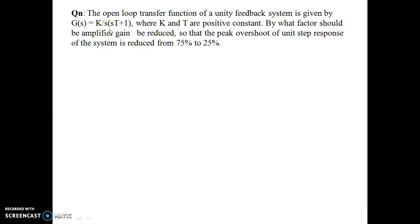In general type questions, we find the transfer function, compare it with the standard second-order system transfer function, identify ωn, ζ, and find the time domain specifications. But here, we have to find the factor of K that should be reduced to reduce the peak overshoot from 75% to 25%.